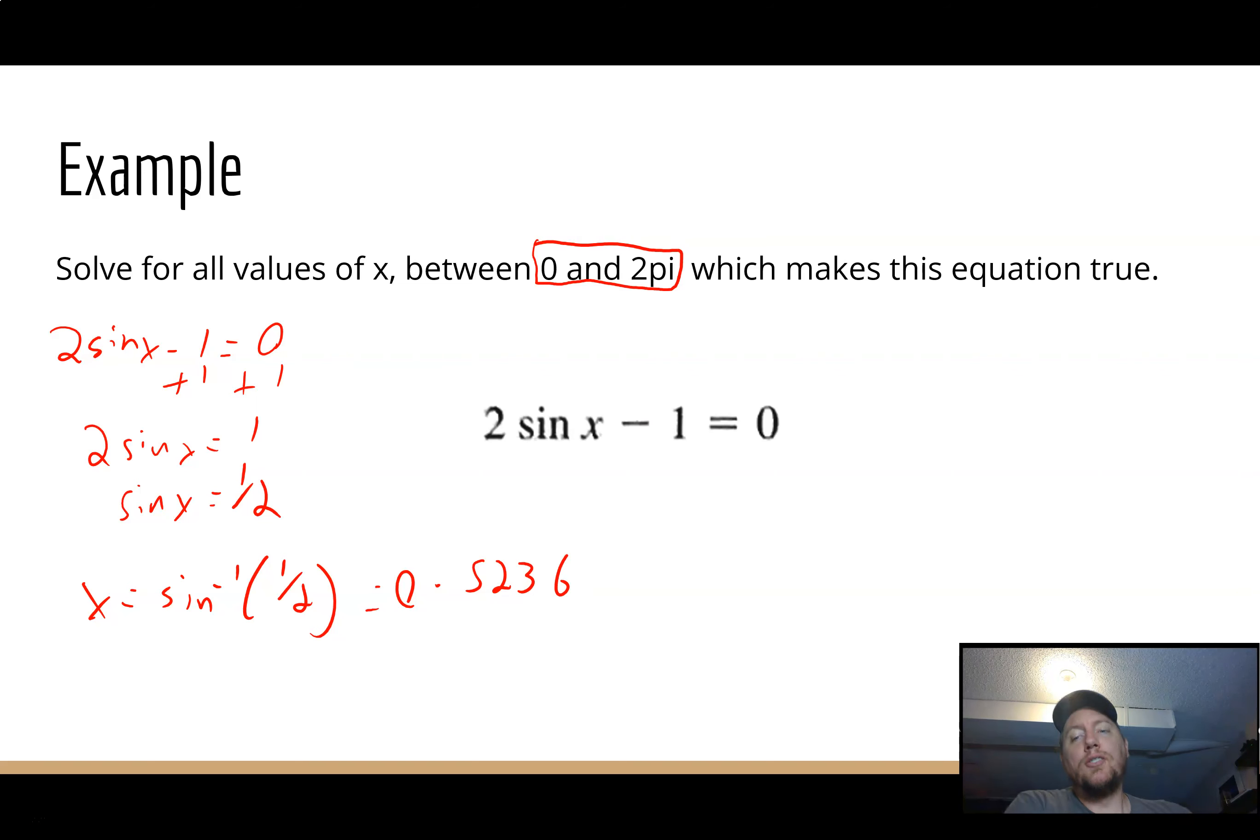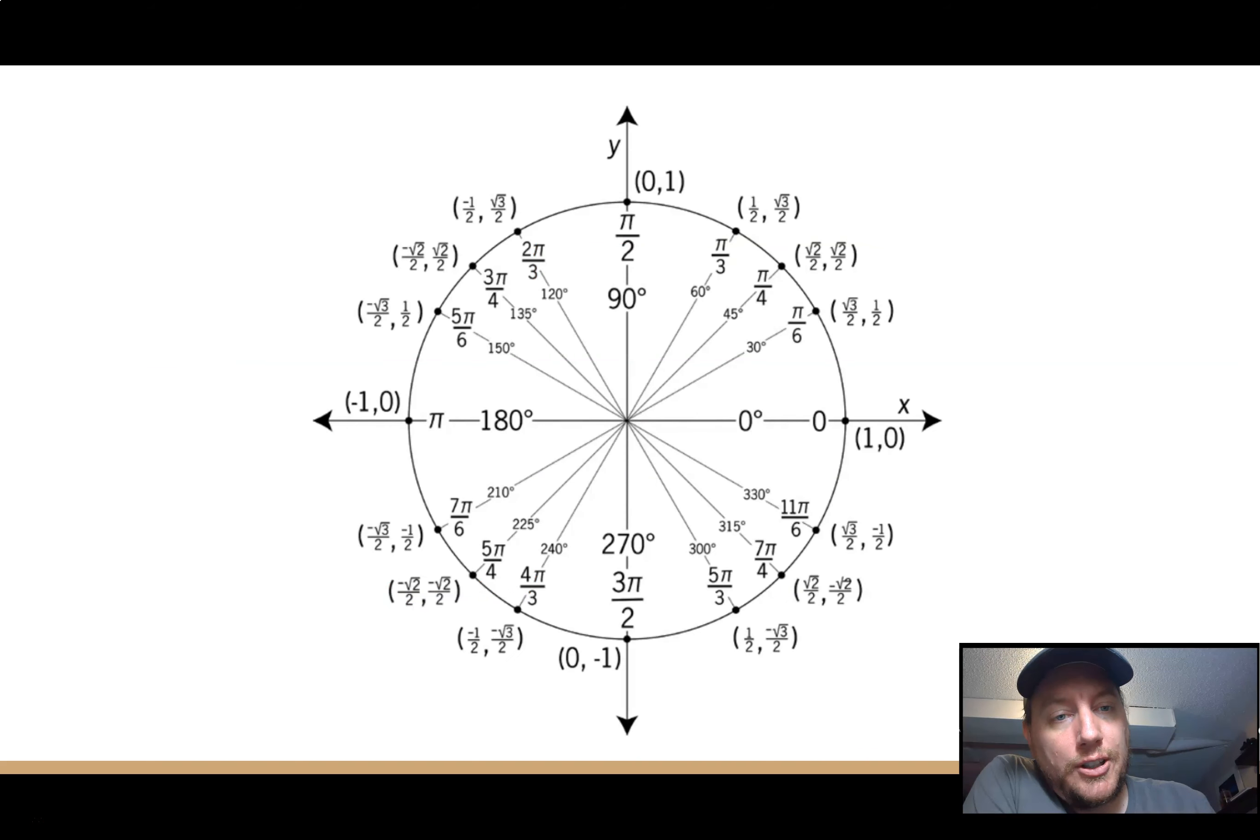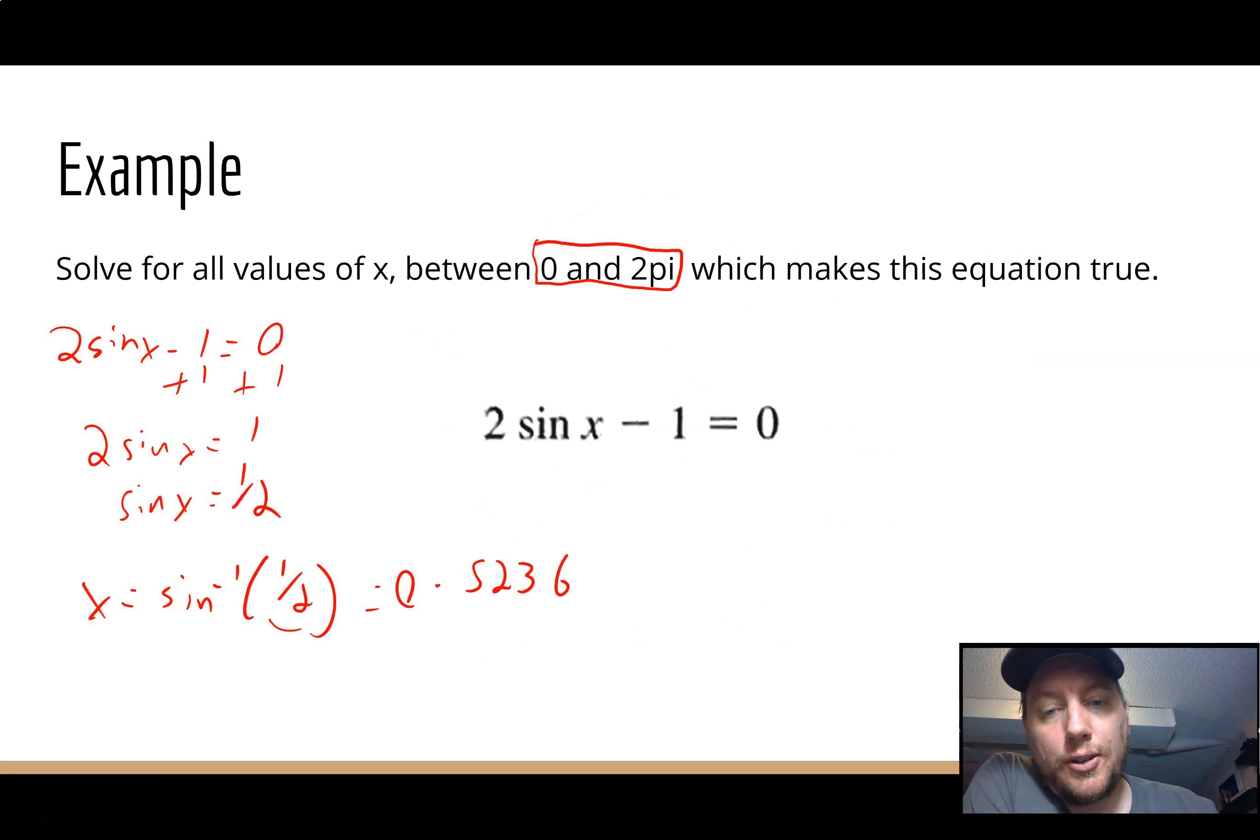So another way to look at it is we are looking for anywhere on the unit circle where the y is 1/2. The sine is 1/2. So on my unit circle here, I have a 1/2 positive there and 1/2 positive there. So my answers between 0 and 2π are π/6 and 5π/6.